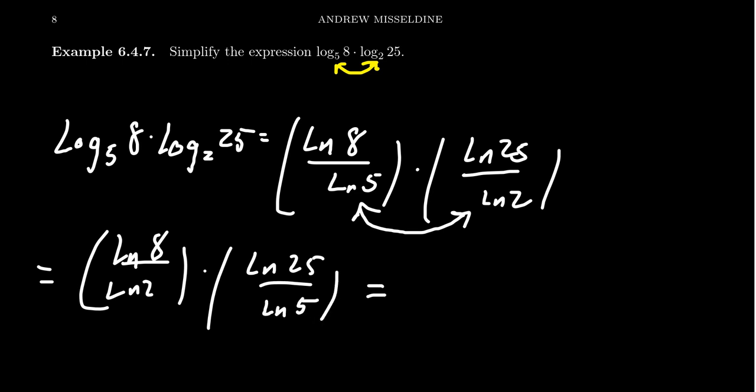And now looking at the first fraction, natural log of 8 over natural log of 2, that's the same thing as the log base 2 of 8. And then the second one, the natural log of 25 over the natural log of 5, that's the log base 5 of 25.